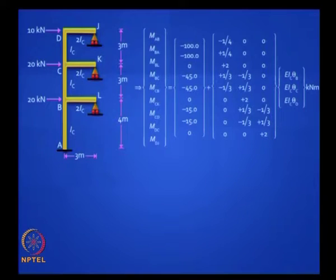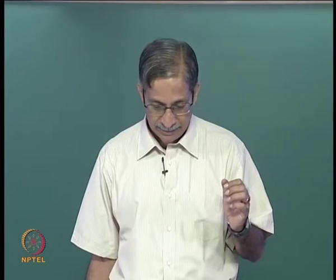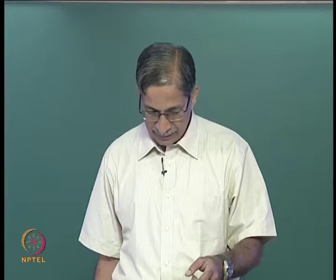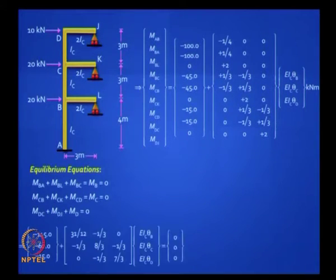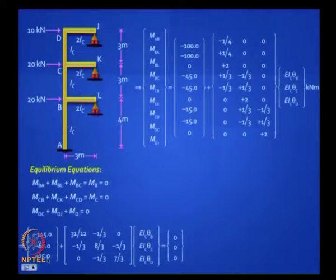Now write down three equations — they are easy because there is no shear equilibrium here, only moment equilibrium. The net moment at B should be 0: M_BA + M_BC + M_BL = 0. Take the corresponding rows in that equation, add them up, and put equal to 0. Likewise for the others. This gives you a stiffness matrix like we did last time. If you change these loads, that only affects the constant vector — nothing happens to the stiffness matrix. That is a property of the structure, and that is what we will study in detail when we take matrix methods.